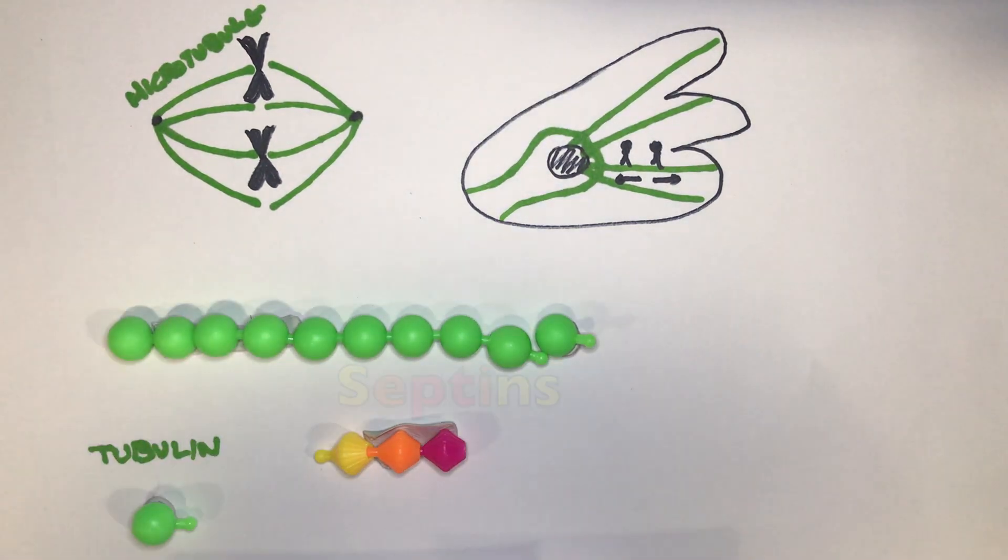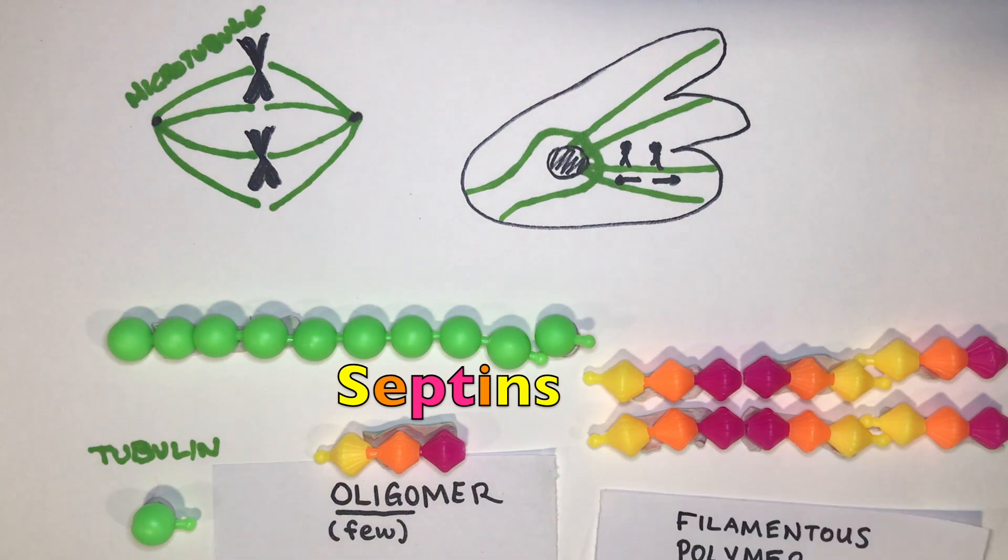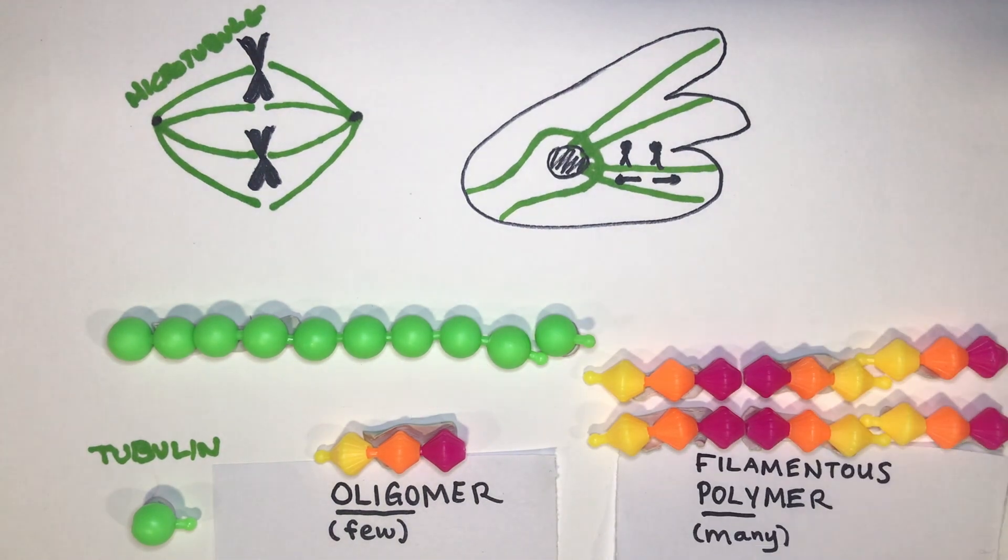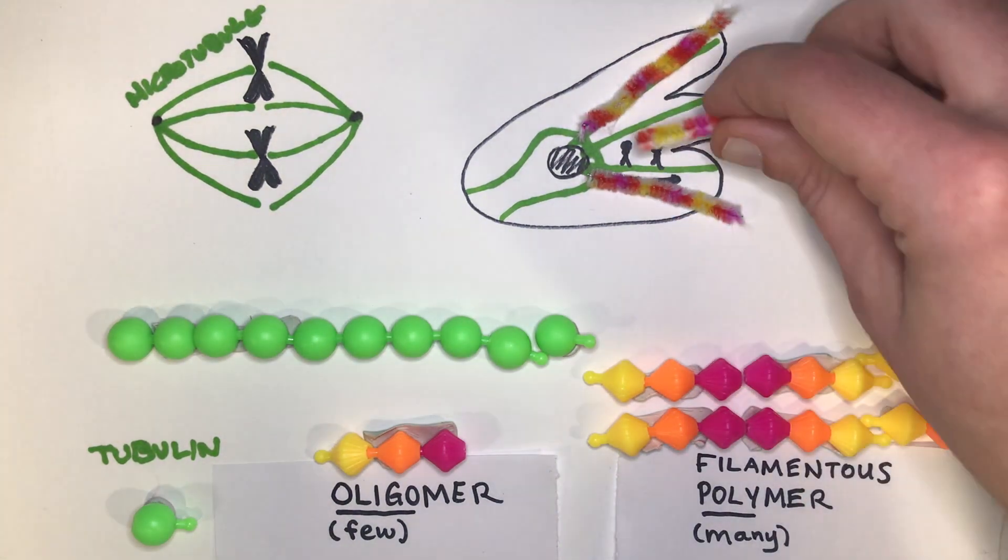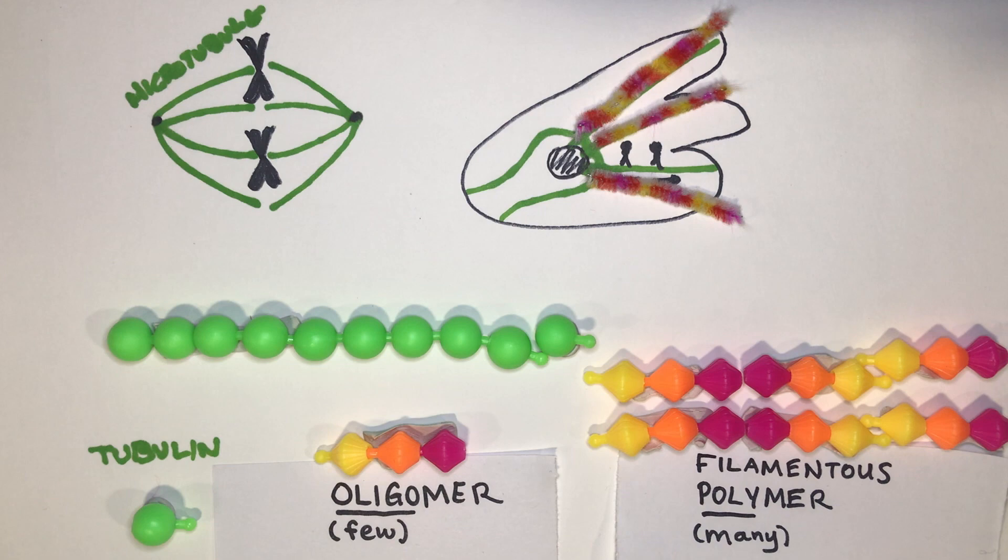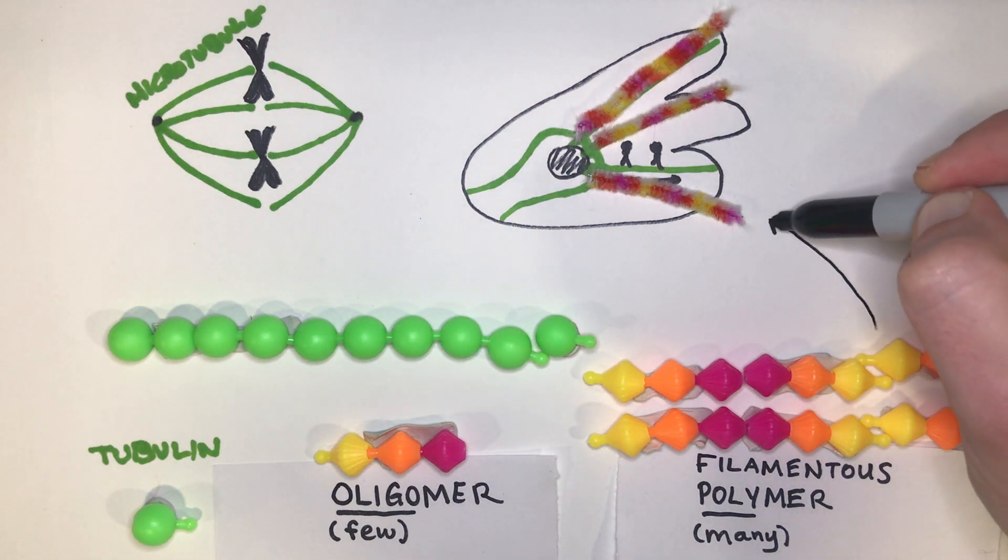Proteins called septins assemble into oligomers and filamentous polymers which associate and colocalize in cells with microtubules. But how do they affect microtubule dynamics?